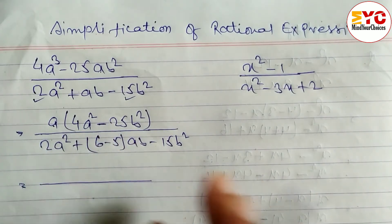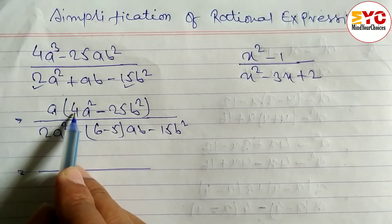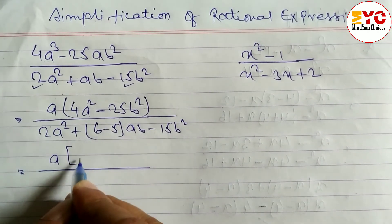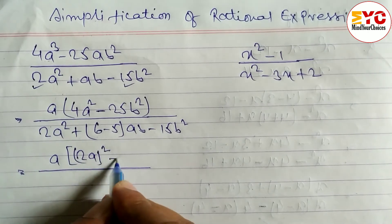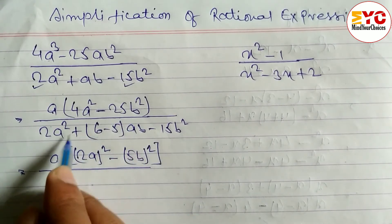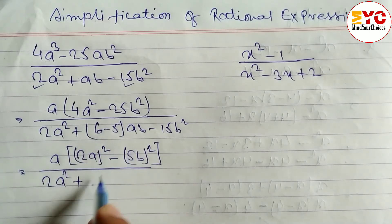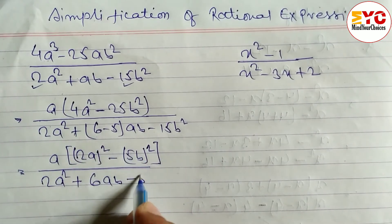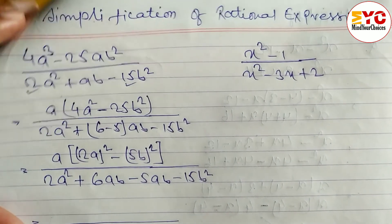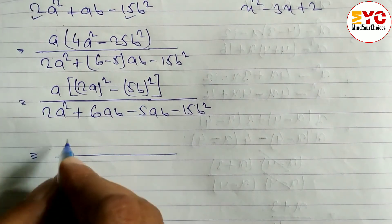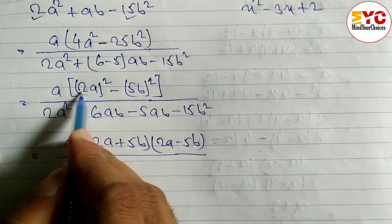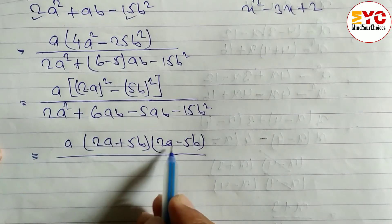In the numerator we can convert 4a² − 25b² into the form a²−b². Square root of 4 is 2, square root of 25 is 5. So we write (2a)² − (5b)², which by the difference of squares formula gives (2a+5b)(2a−5b).